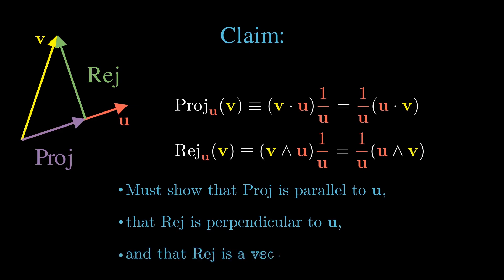We need to show that the rejection, a multi-vector expression in this case, is in fact a vector. It has no components that are parallel to u.